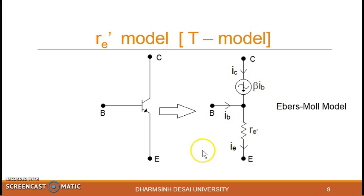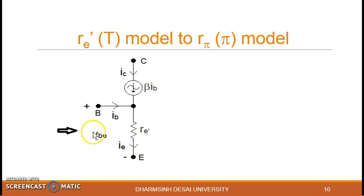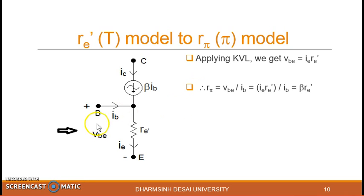For input side looking from the base, input current will be IB. So if I apply the KVL I will get VB equal to IE into RE dash. When we look from the base part we call that resistance as R pi. R pi equal to VB upon IB but VB is nothing but IE into RE dash. IE is approximately same as IC and IC is beta IB. So you get R pi is nothing but beta RE dash. So looking from here the forward bias diode offers a resistance of beta RE dash.